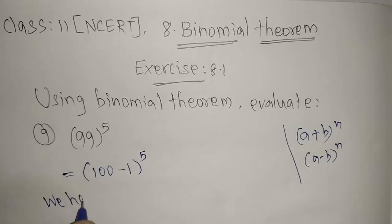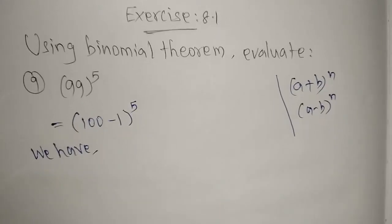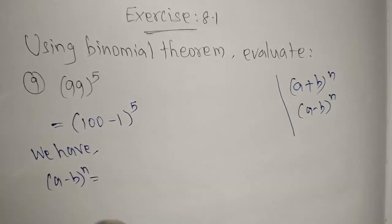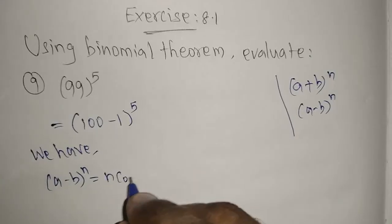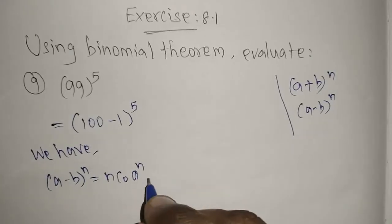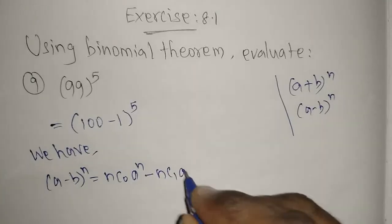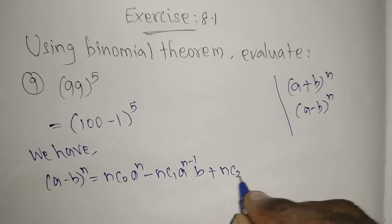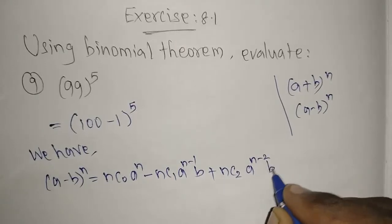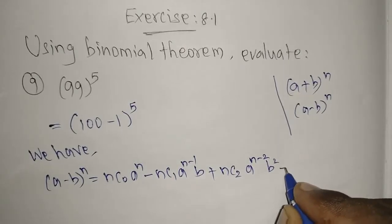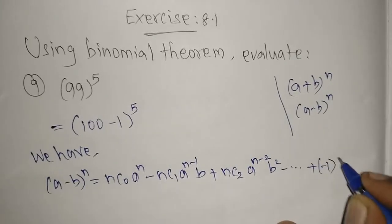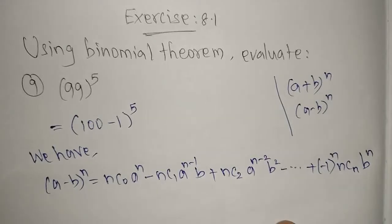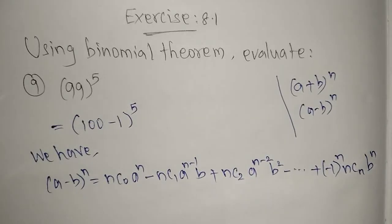We have the formula: (a - b)^n = nC0 * a^n - nC1 * a^(n-1) * b + nC2 * a^(n-2) * b^2 - ... + (-1)^n * nCn * b^n. Now we will use this formula here.